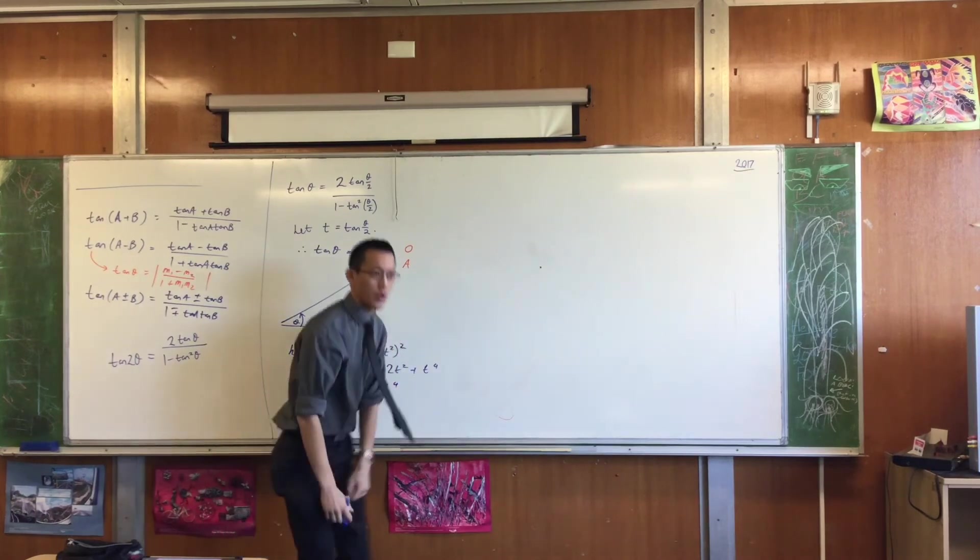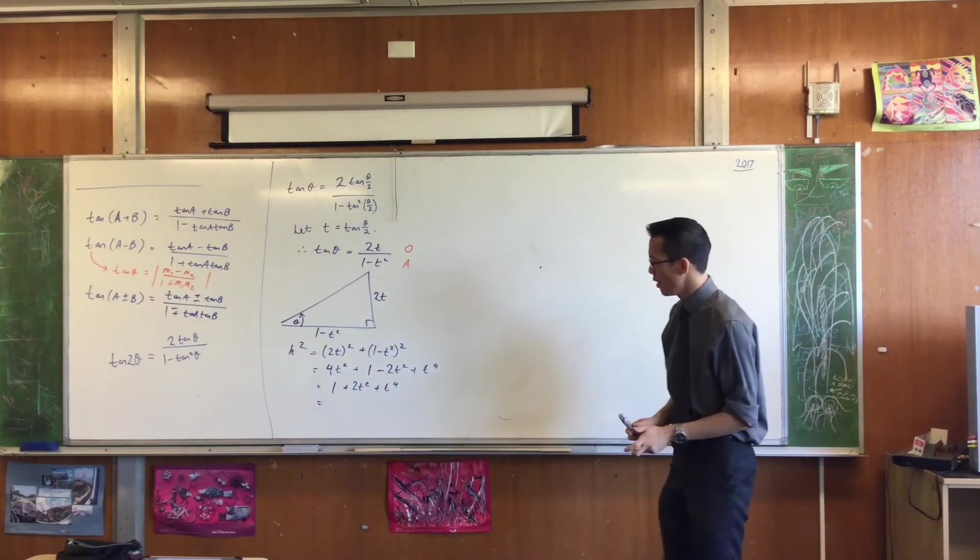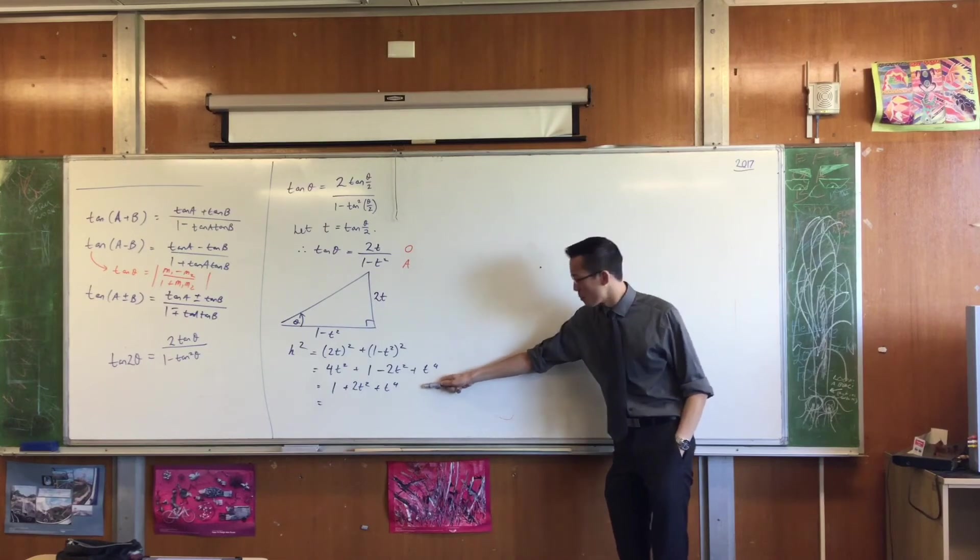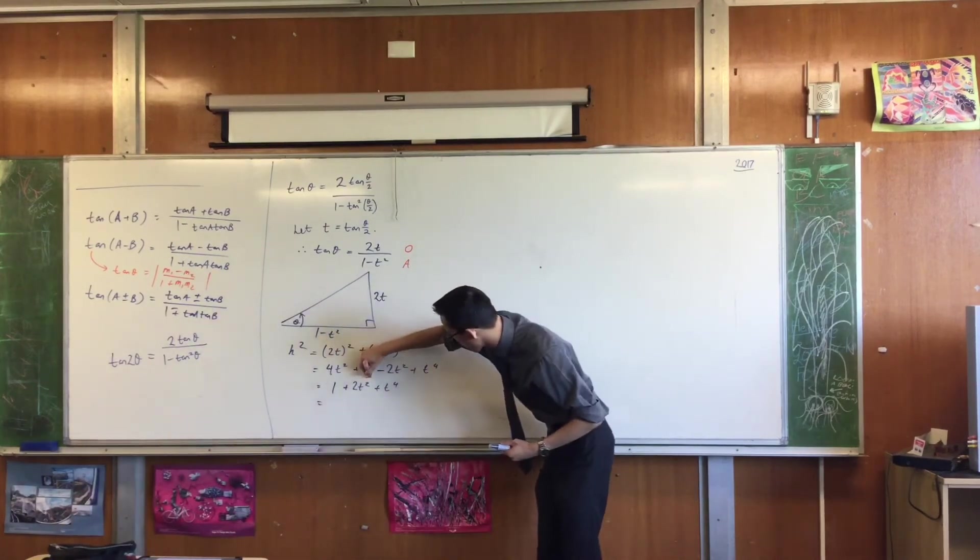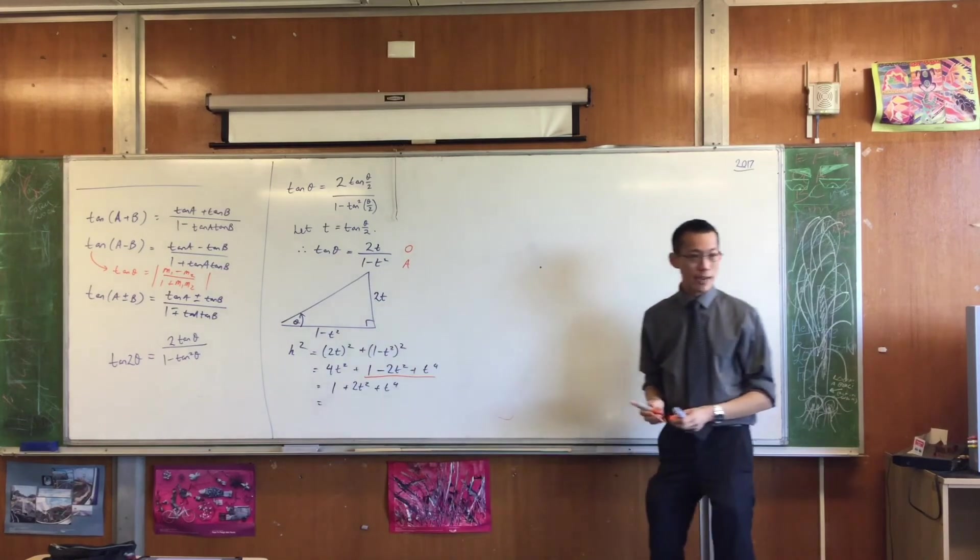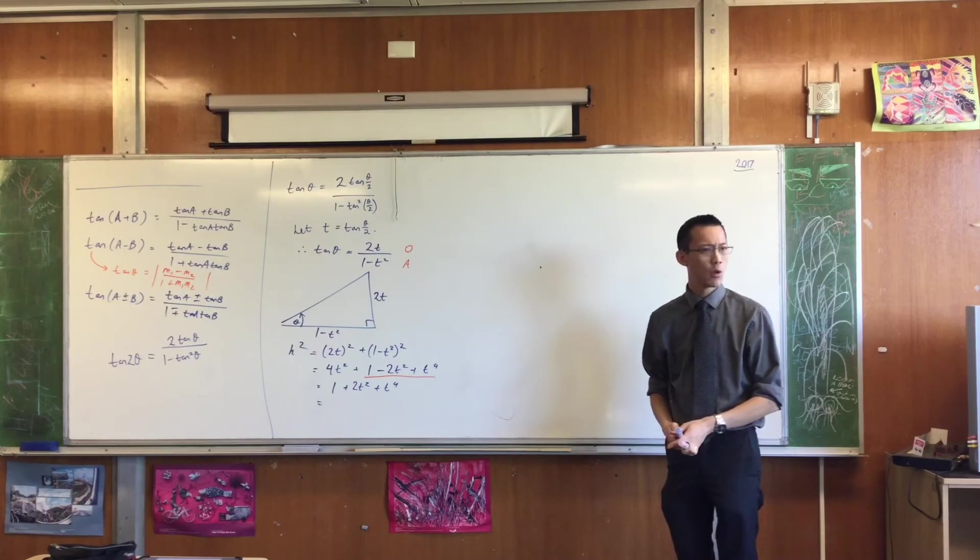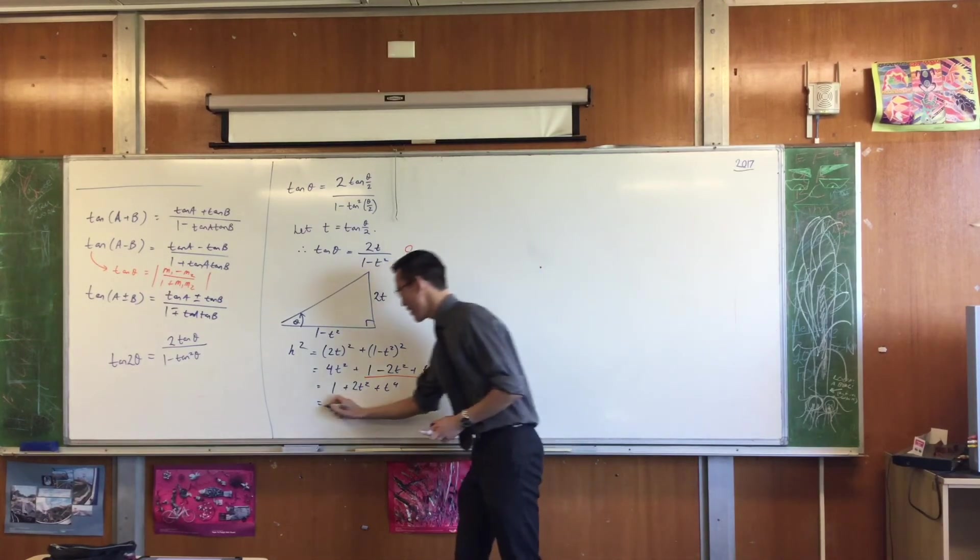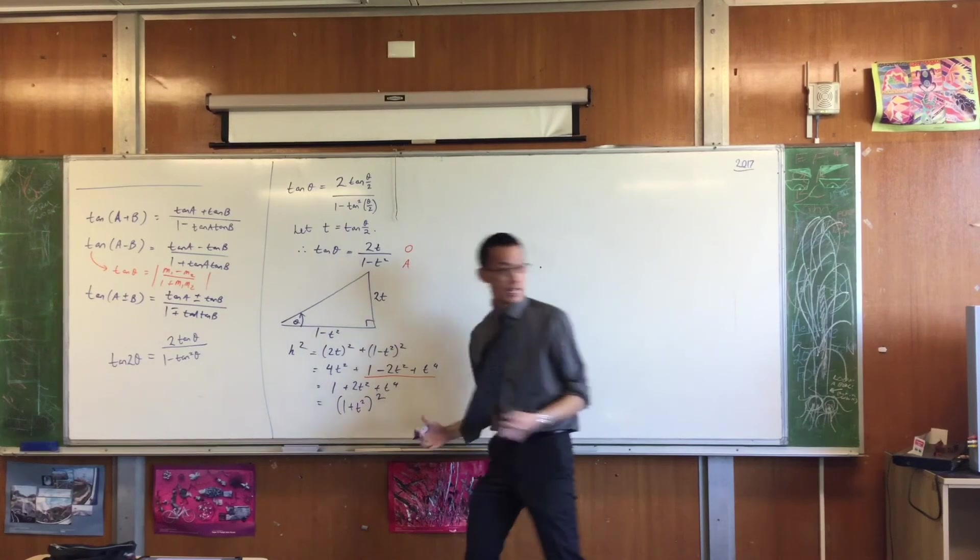Now, I know you don't work with powers of 4 very often. That's a quartic, by the way, as we call it. But hopefully, if you think about this line, and how it compares to this part of the previous line, do you recognize that what you're looking at right now is another perfect square? What is it the square of? 1 + T². This is (1 + T²)², is it not?